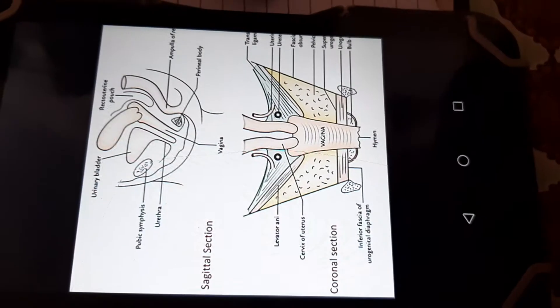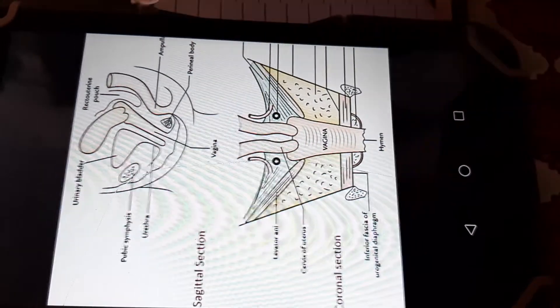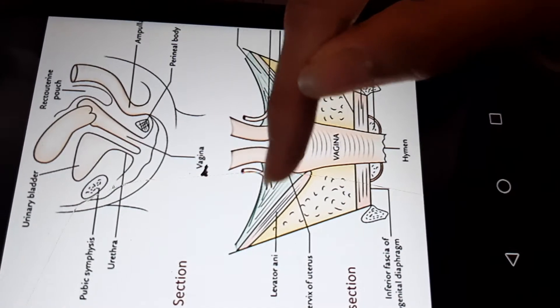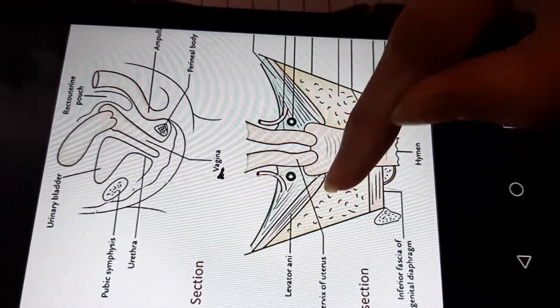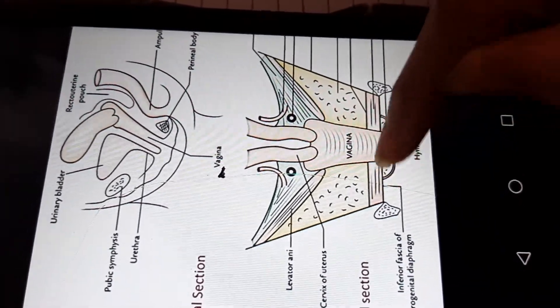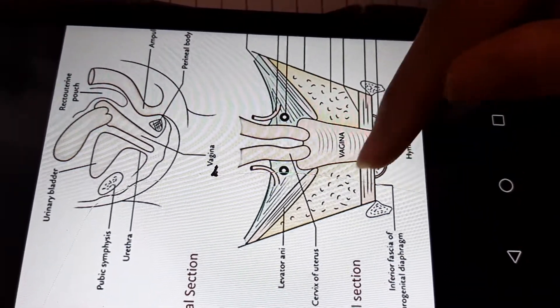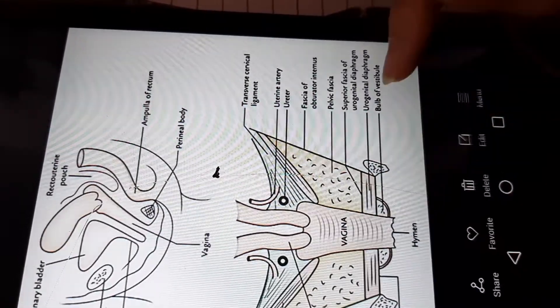Lateral relations of vagina: laterally upper one-third has ureter, middle one-third has levator ani fibers on both sides, and lower third has urogenital diaphragm which has two layers, superior and inferior, and one other structure is bulb of vestibule. We will see in external genitalia how it's formed from corpus spongiosum.